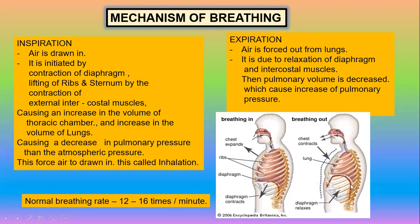The diaphragm is a muscular dome-shaped structure. Inspiration is also initiated by contraction of the muscles located between the ribs, called external intercostal muscles. The thoracic volume increases, then the pulmonary volume — the lung volume — also increases. When volume increases, pressure decreases, and atmospheric air at higher pressure is drawn into the lungs.